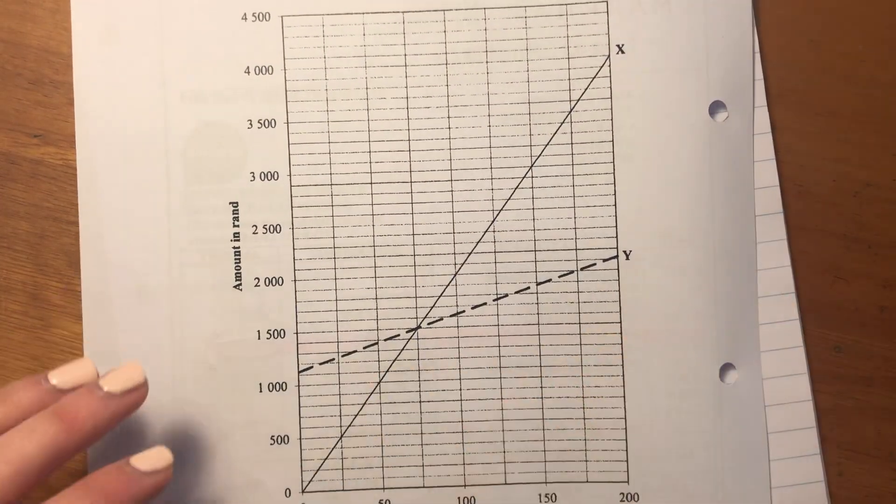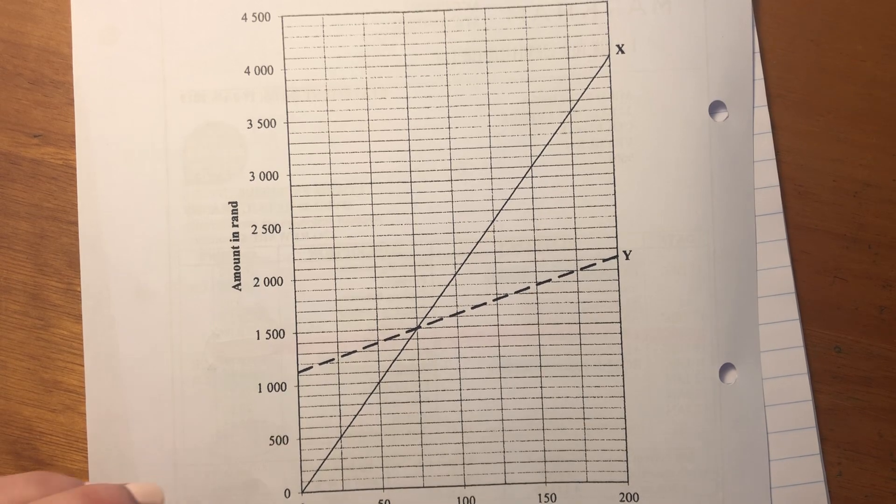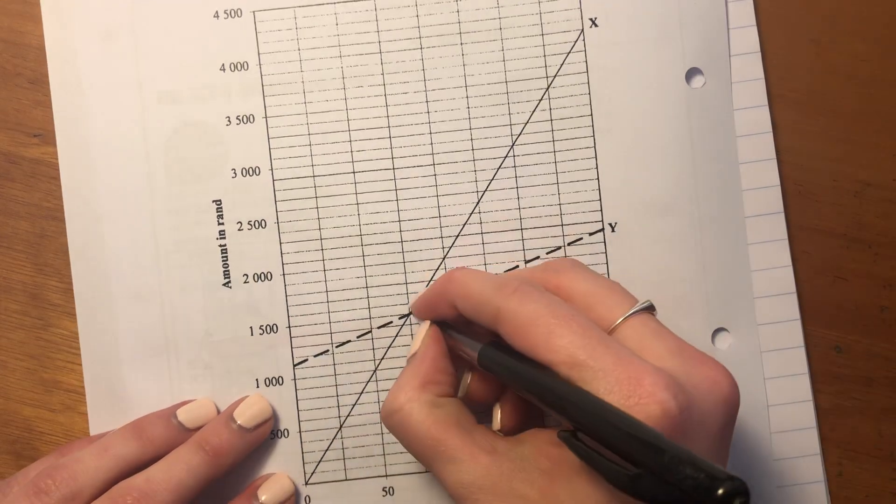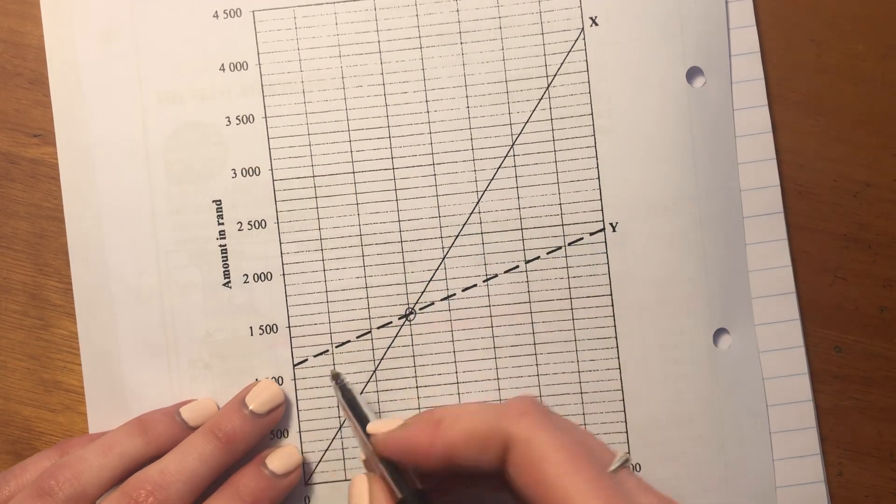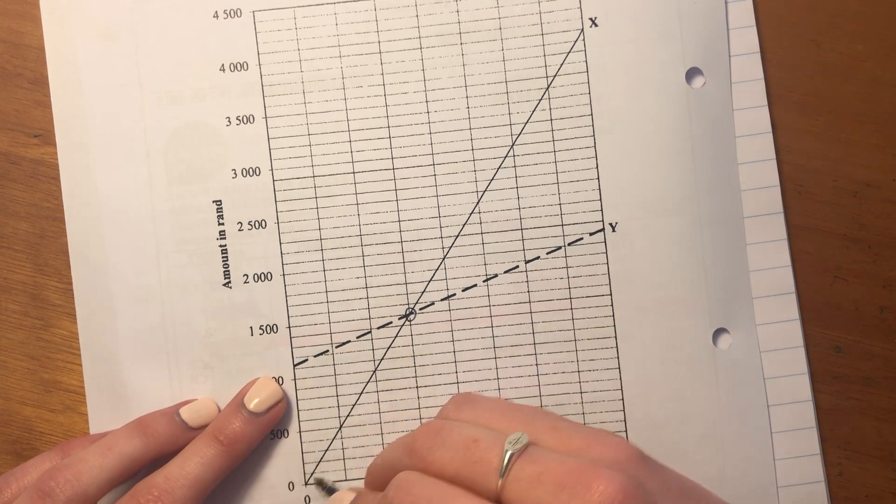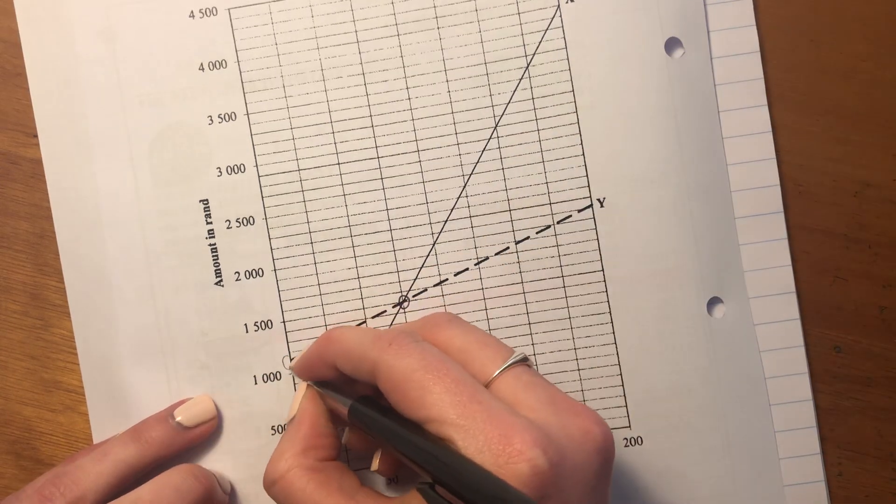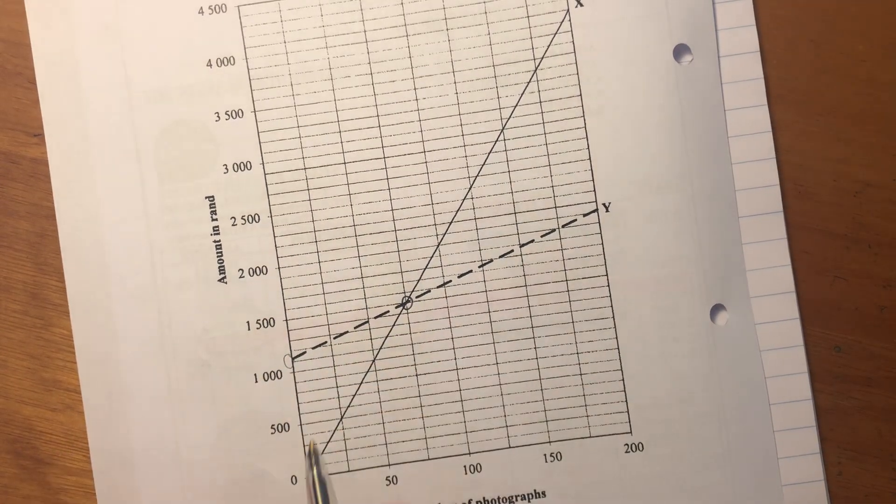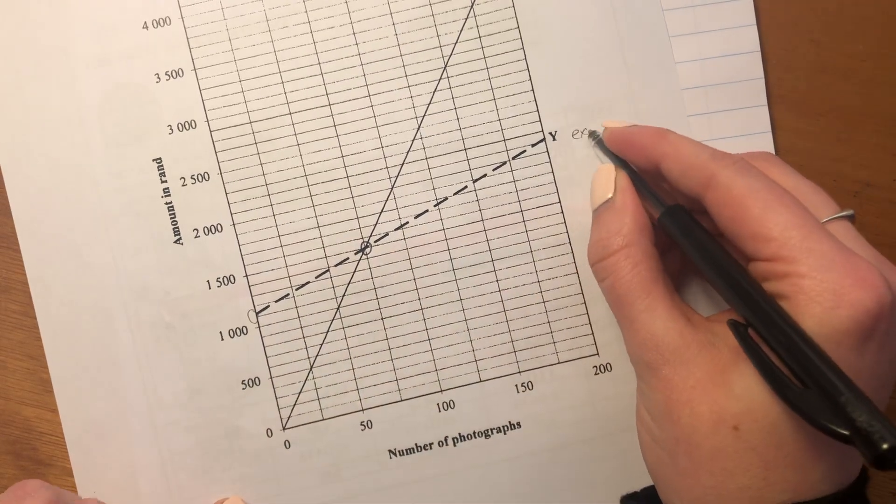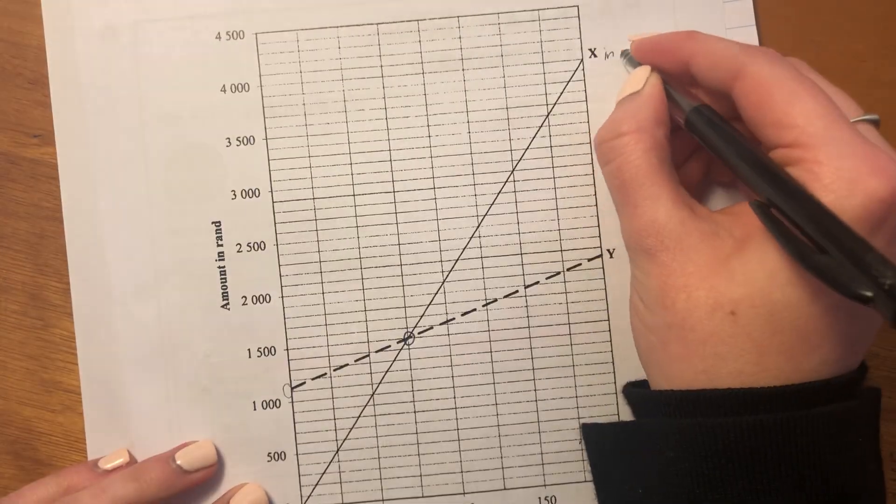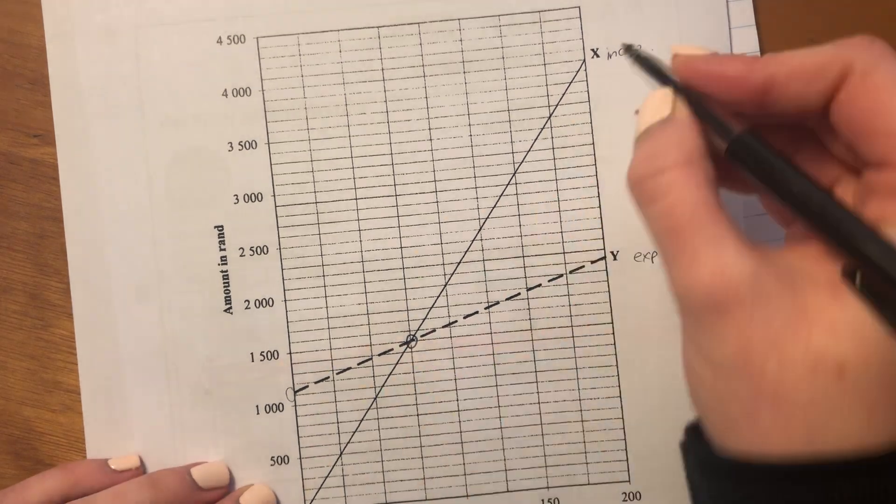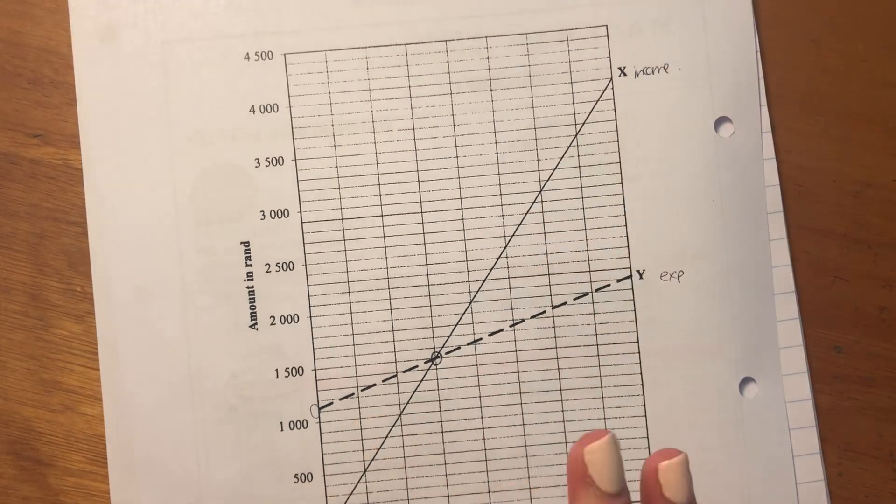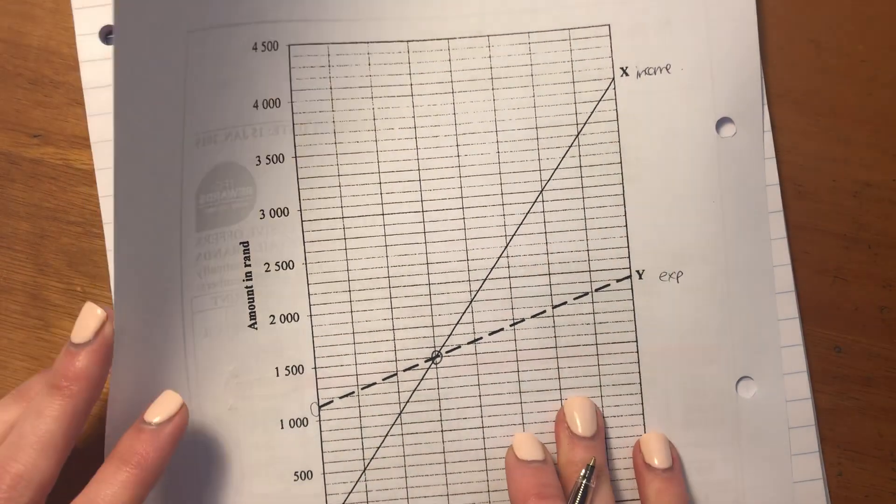...that this is a pretty standard income and expense graph. We can see that this is the break-even point. You should be able to see that this is the expense and this is the income. Because remember, our expenses, we start with a fixed cost. So it doesn't start at zero. So this we know is going to be our expenses. This is going to be our income.